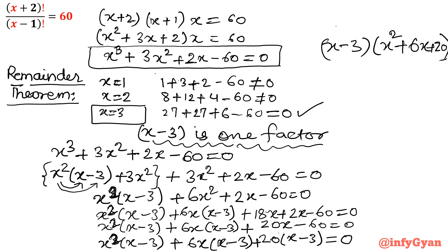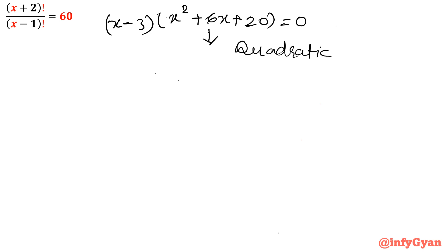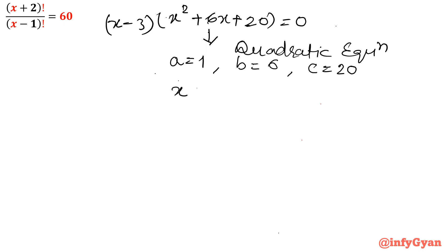So the final factored form is (x - 3)(x² + 6x + 20) = 0. The task is now simple. From the first bracket, x - 3 = 0 gives x = 3. Obviously this is our real solution. The second bracket x² + 6x + 20 = 0 is a quadratic equation, which I will solve using the quadratic formula.